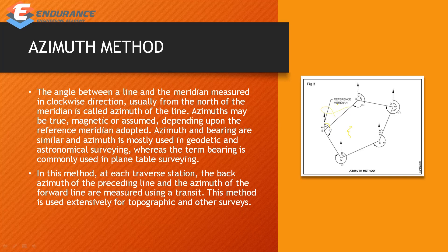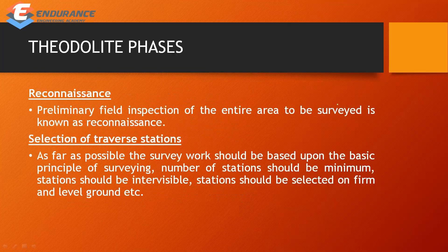Using a transit instrument, you can calculate both the back side and fore side azimuths. This method is used in topographic and other surveys.